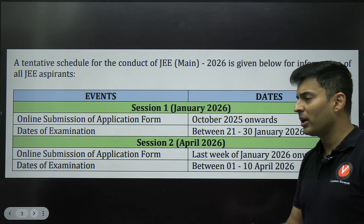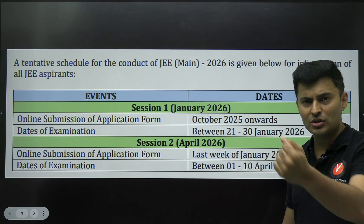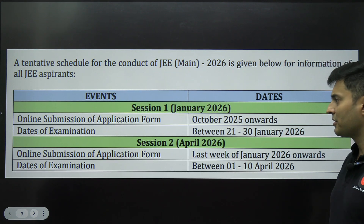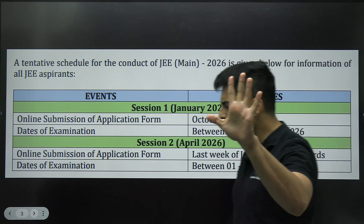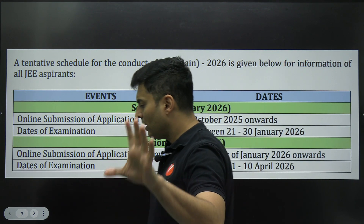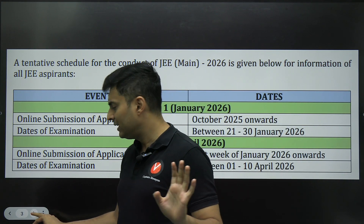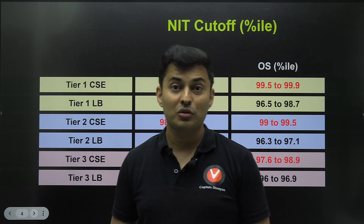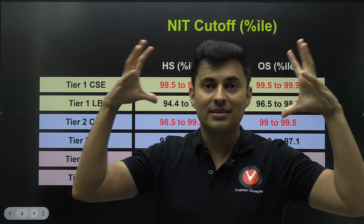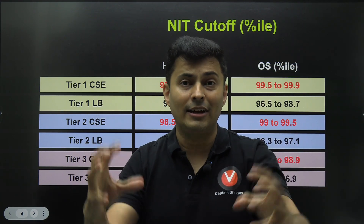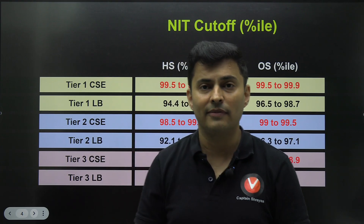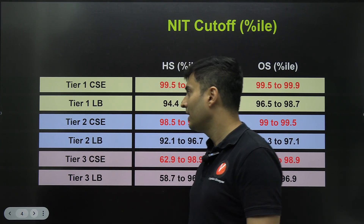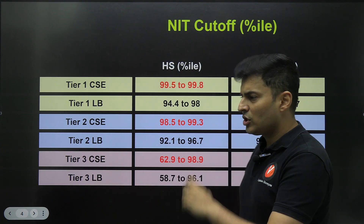The second attempt is in April, and there is a board examination coming for class 12th students. So we have a target date, time is limited, and we need to consider that factor — it is a very big factor. It's not two years or one year. Now let's talk about the NITs cutoff in percentile terms, then we'll go to marks.